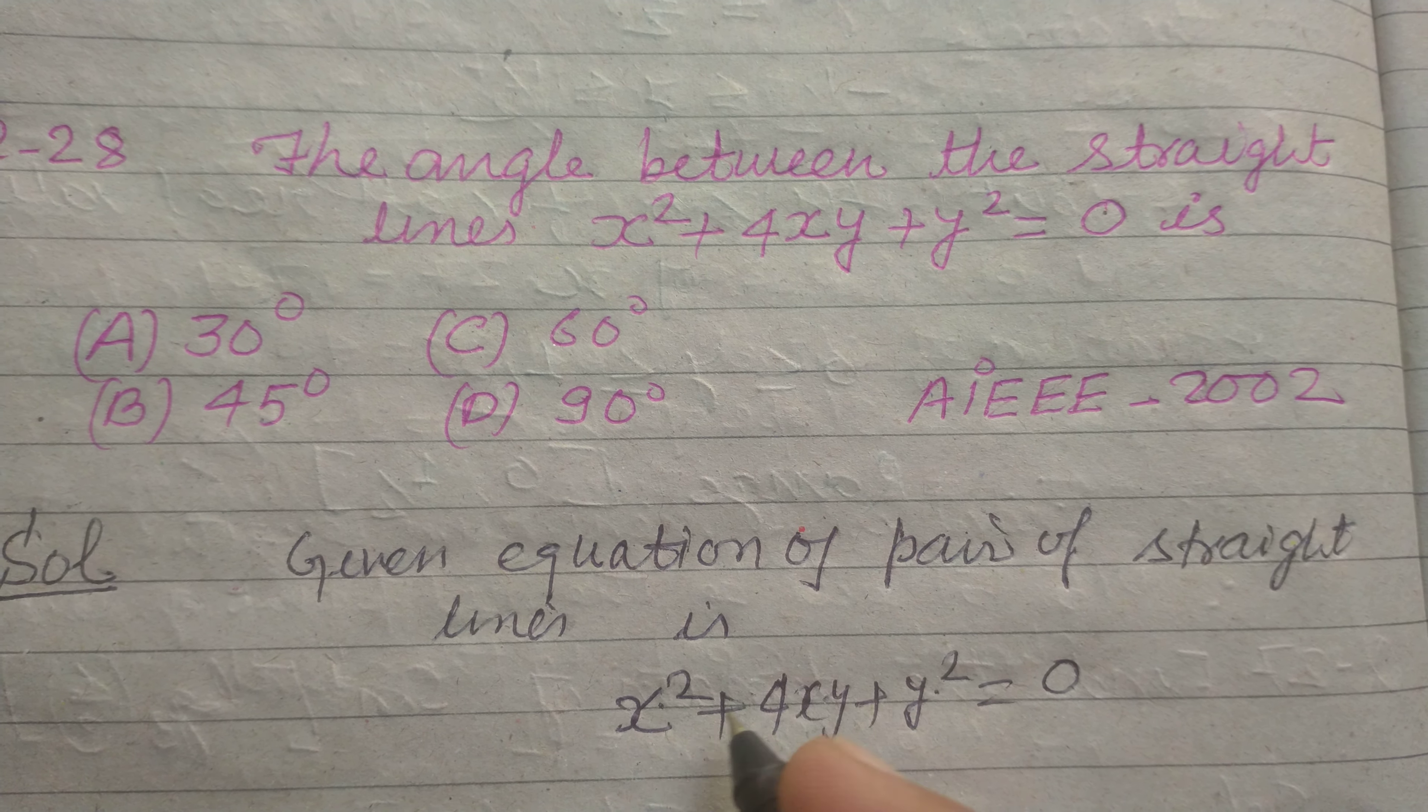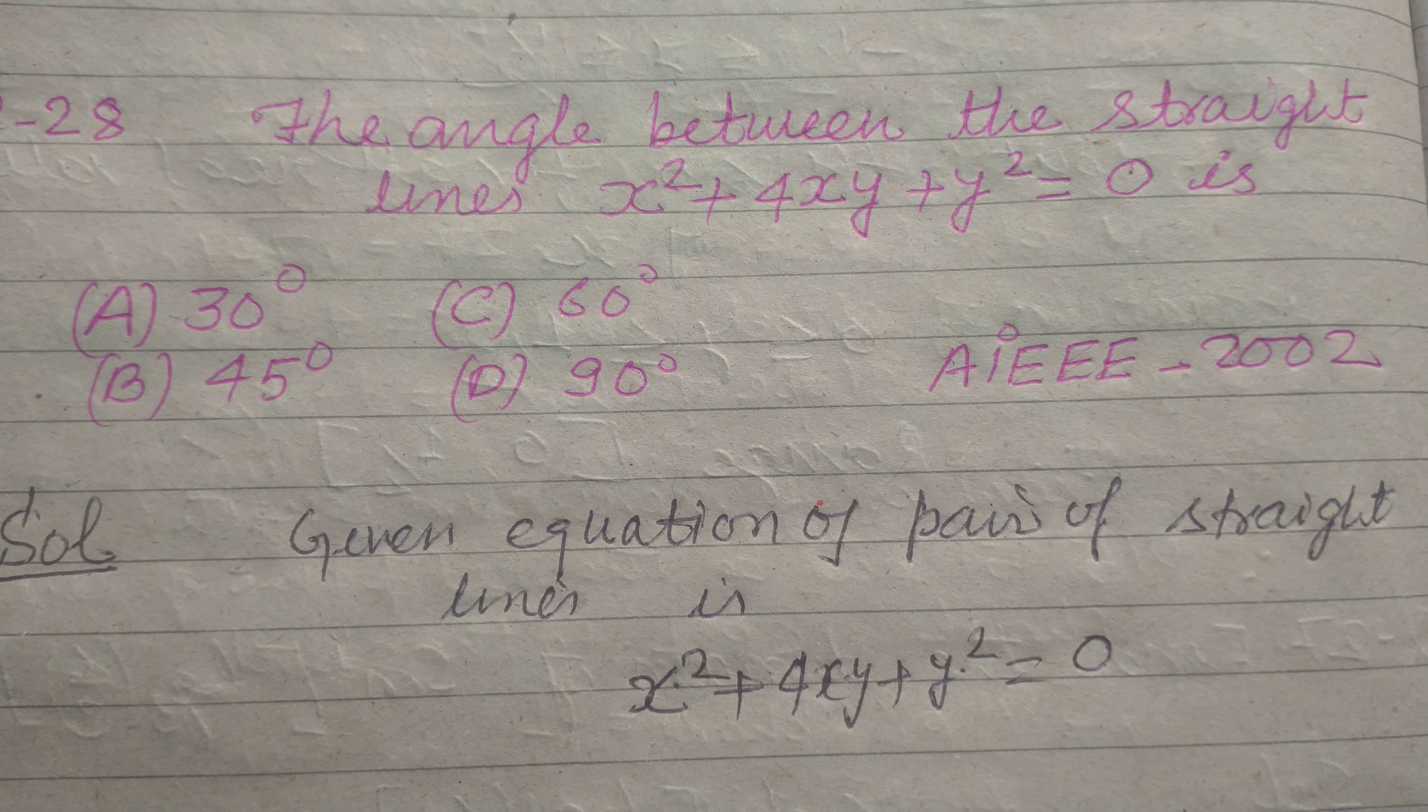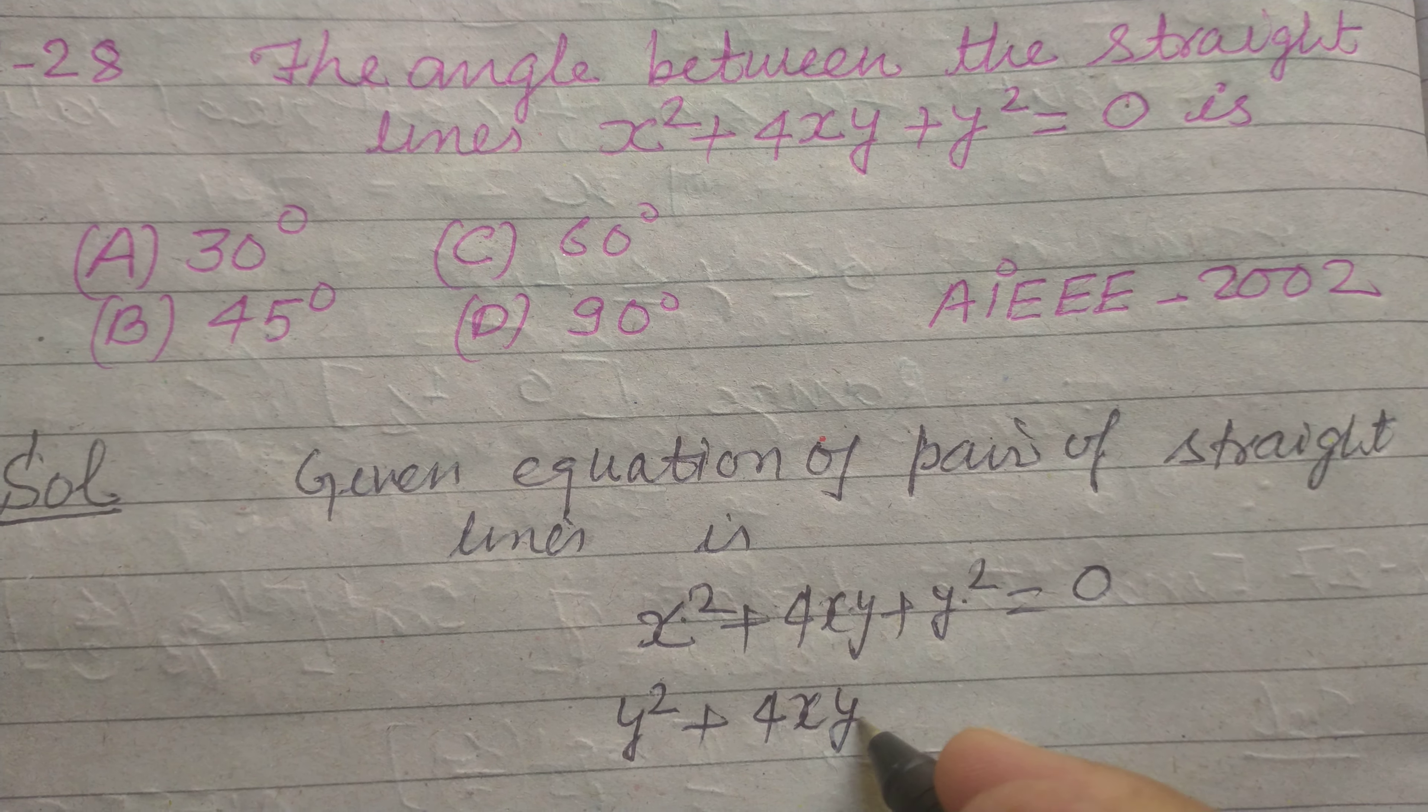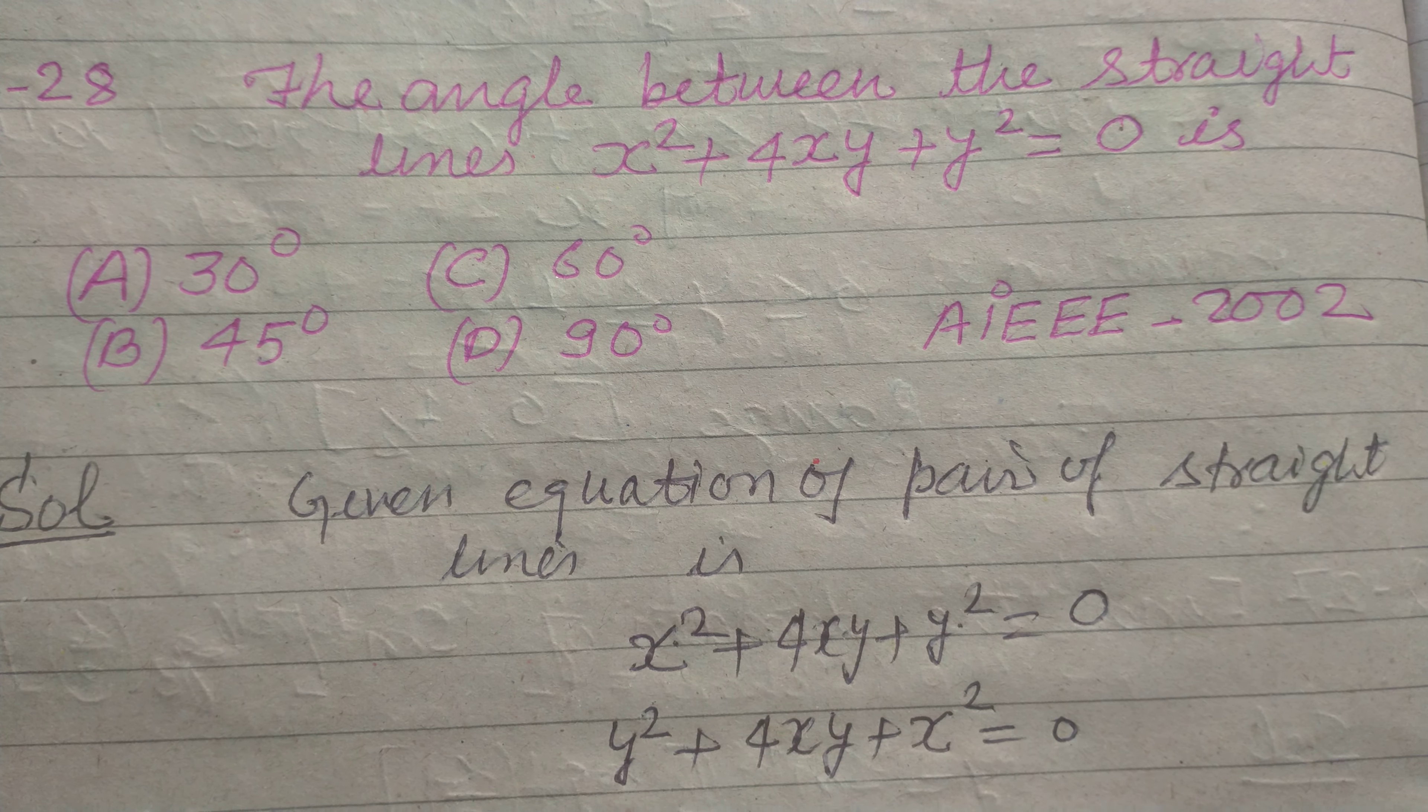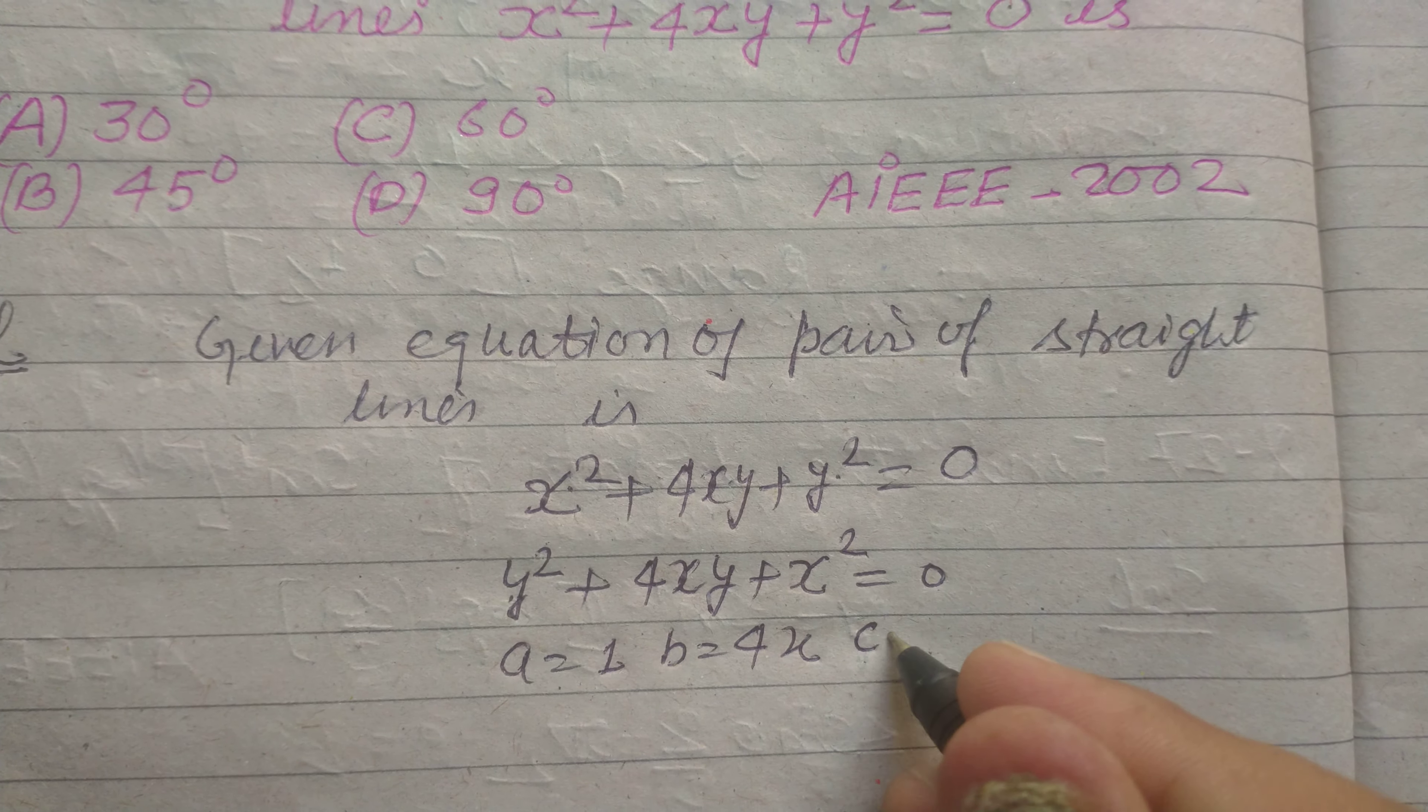So we want to break this pair of lines into two different lines. So we take it as y² + 4xy + x² = 0. Now this is the quadratic equation in y. Here a is 1 and b is 4x and c is x².